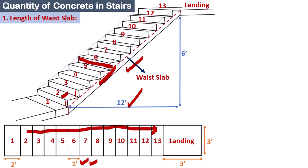We calculate the length of the waist slab by applying the Pythagorean theorem: √(12² + 6²). By simplifying, we get 13.42 feet. This is the inclined length of the waist slab, shown with dashed red lines in the diagram.